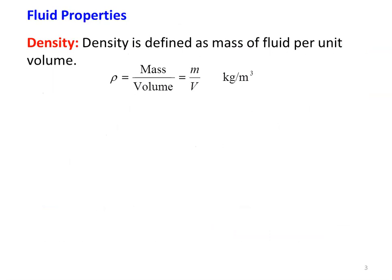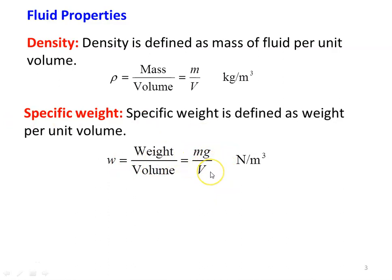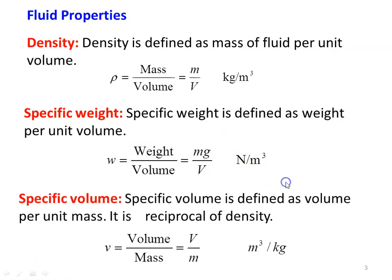Now we look at basic fluid properties. The first property is density, defined as mass per unit volume: rho equals mass divided by volume, in kilograms per meter cube. The second property is specific weight, defined as weight per unit volume: weight equals m times g. Specific volume is defined as volume per unit mass, which is the reciprocal of density — volume divided by mass, in cubic meters per kilogram.